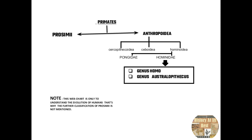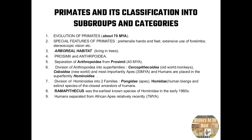The introduction of apes in human evolution was about 30 million years ago according to fossil records and archaeological evidences. Hominoidea was further divided into two categories: genus Homo and genus Australopithecus. Key features: evolution of primates about 70 million years ago, separation of Anthropoidea from Prosimii about 40 million years ago, and apes appearing about 30 million years ago. Humans are placed in the superfamily Hominoidea.